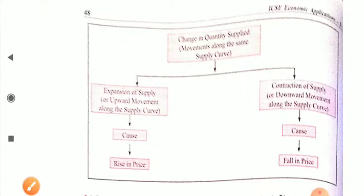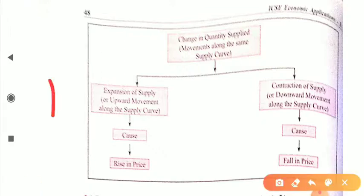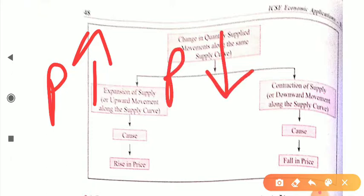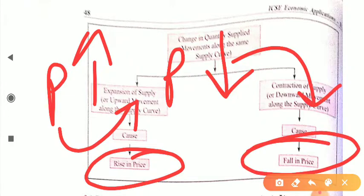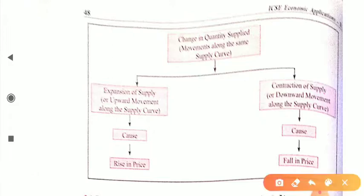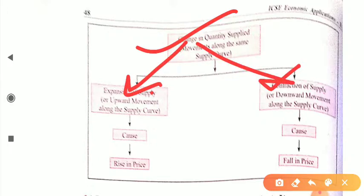Always keep in mind that movement along the supply curve is possible only because of price. There are two cases: when the price of a commodity increases, it represents extension in supply — your supply curve moves upward. When price decreases, you have contraction of supply — your supply also decreases.